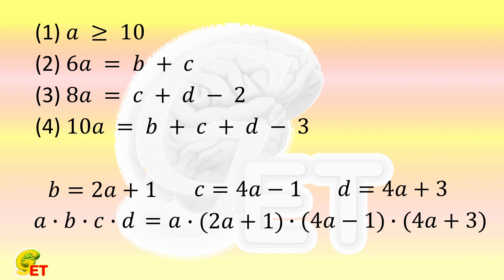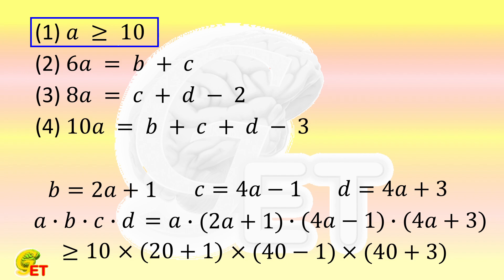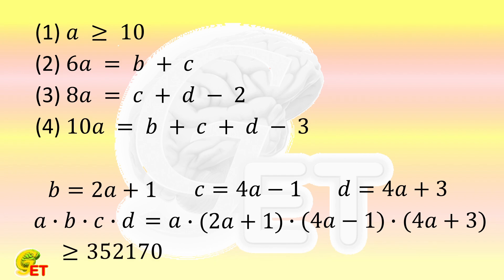Because these four factors are all monotonically increasing with A, and the final product is also monotonically increasing with each factor, according to the minimum value of A given by the first condition, the minimum value of each factor can be calculated. And then the minimum value of the product can be obtained as 352,170. Thank you for watching, and see you next time.